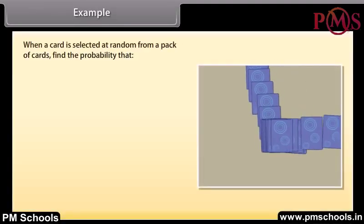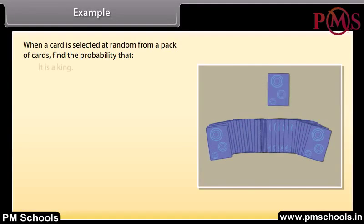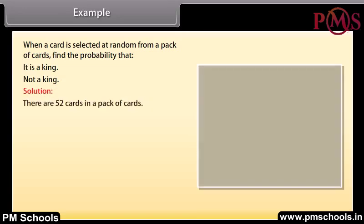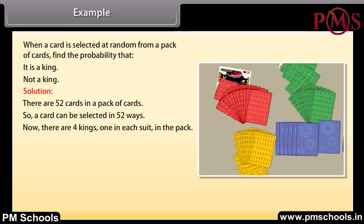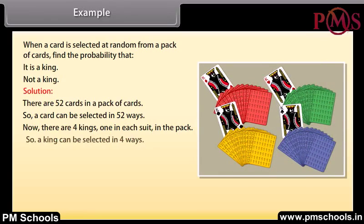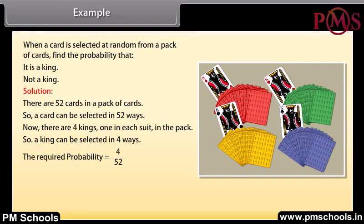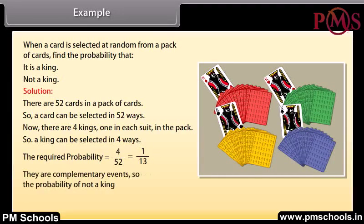When a card is selected at random from a pack of cards, find the probability that it is a king or not a king. Solution: There are 52 cards in the pack, so a card can be selected in 52 ways. There are 4 kings, one in each suit. So a king can be selected in 4 ways. The required probability of selecting a king = 4/52 = 1/13. These are complementary events. So, the probability of not a king = 1 − 1/13 = 12/13.